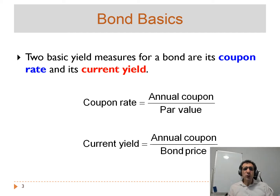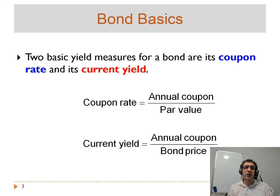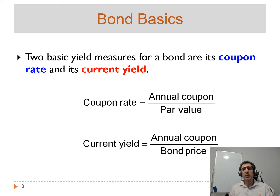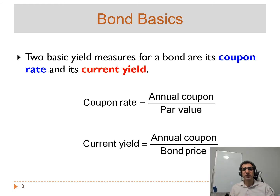We also have another term used to determine the yield or return on the bond, which is called the current yield. If you divide the annual coupon payment by the bond price, you can find the current yield. I will talk about current yield in more detail, but remember: current yield equals the annual coupon payment divided by the value or price of the bond.